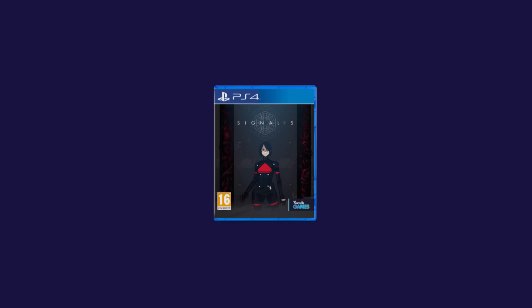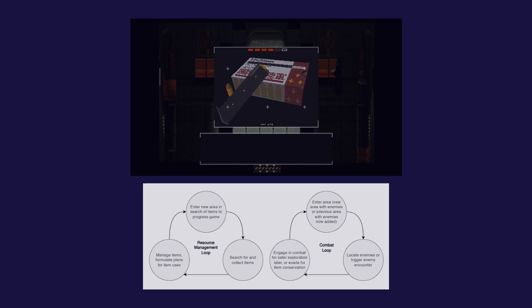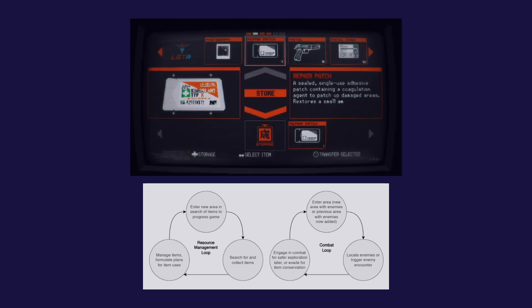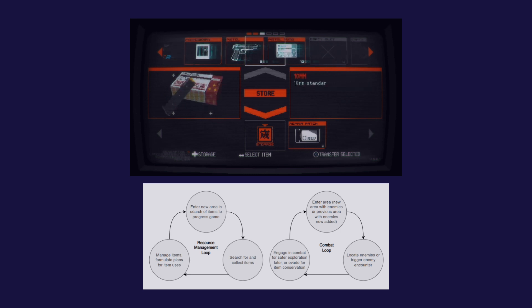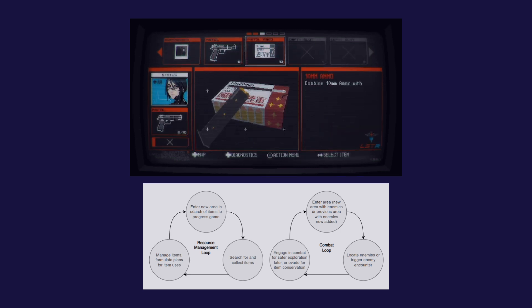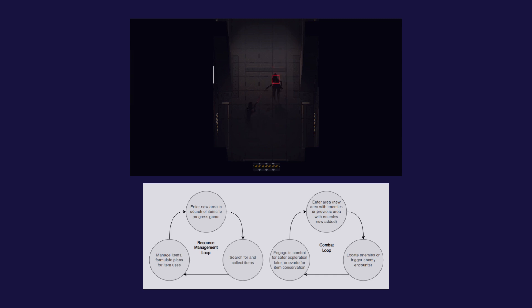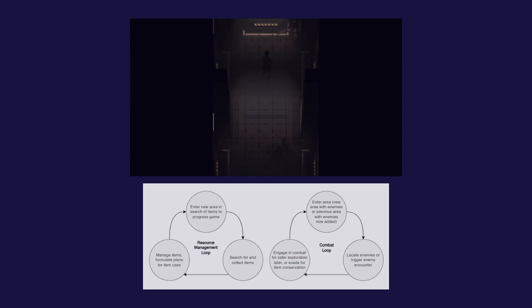Starting with the core loops of Signalis, we can see that the survival aspects are largely at play, with a persistent need to attend to the player's collected resources, items and weapons, all the while engaging with or evading the game's many enemies. In some instances, these two loops feed into one another, expecting the player to have collected munitions to fight with or dispatching enemies to collect items.